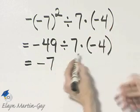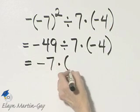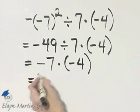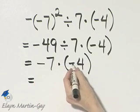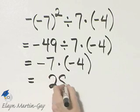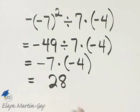So I have negative 7 times negative 4. It's multiplication, I have a negative times a negative, the product is then positive, and 7 times 4 is 28. So the answer is positive 28, or simply 28.